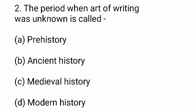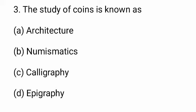Question number 2 — the period when the art of writing was unknown is called: A) Prehistory, B) Ancient history, C) Medieval history, or D) Modern history. The correct answer is A — Prehistory.